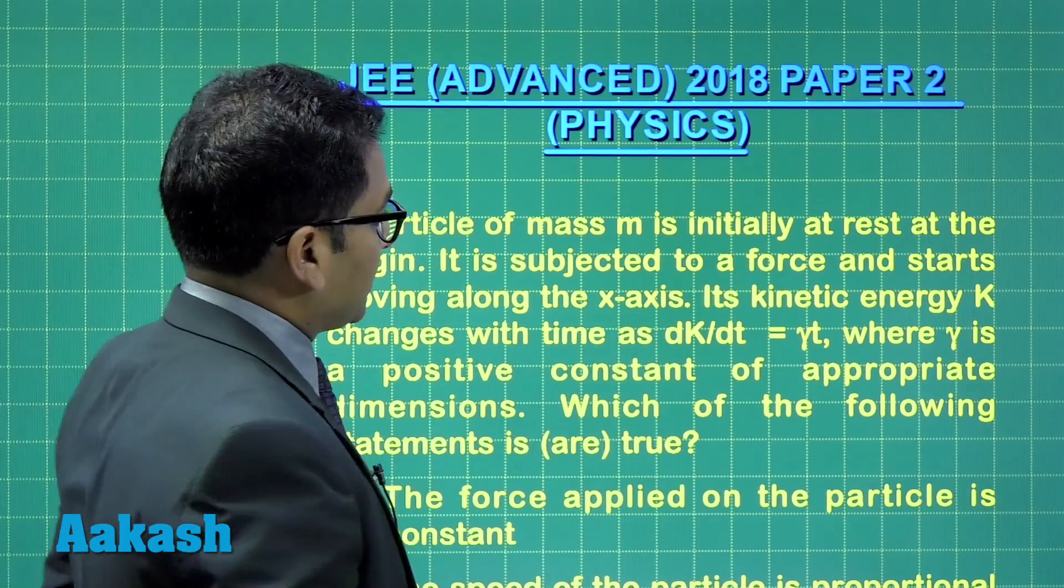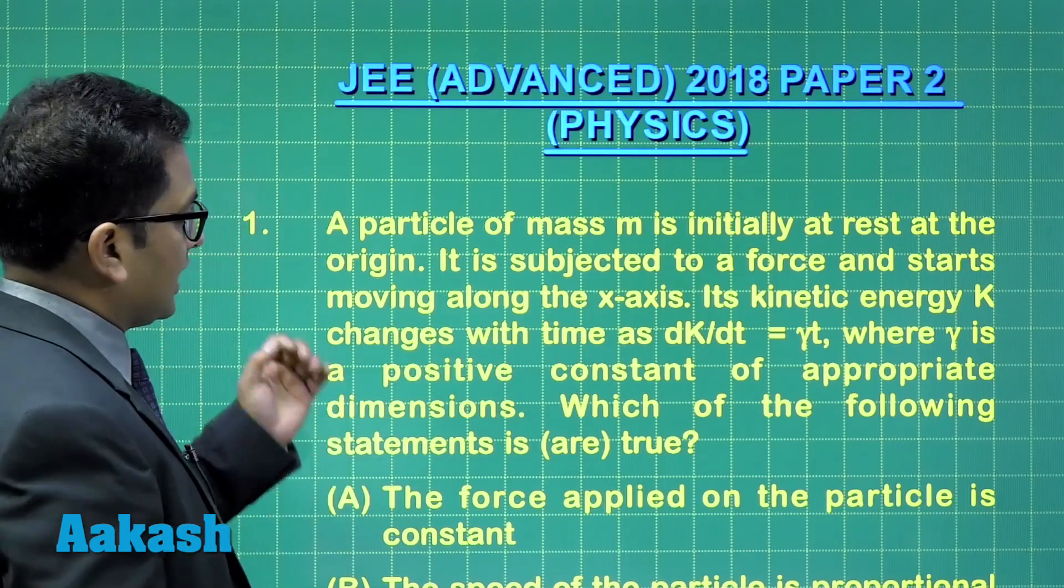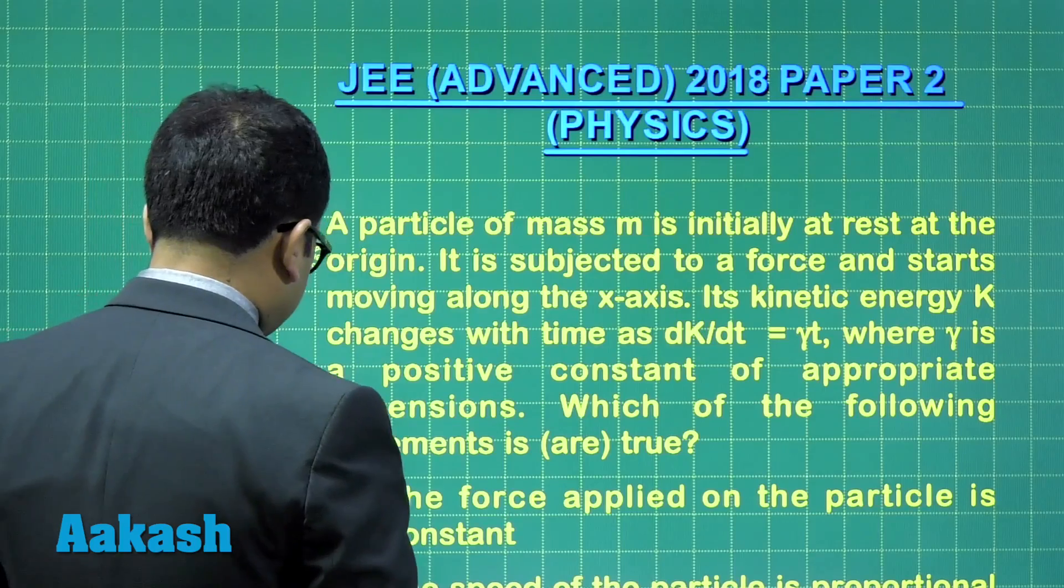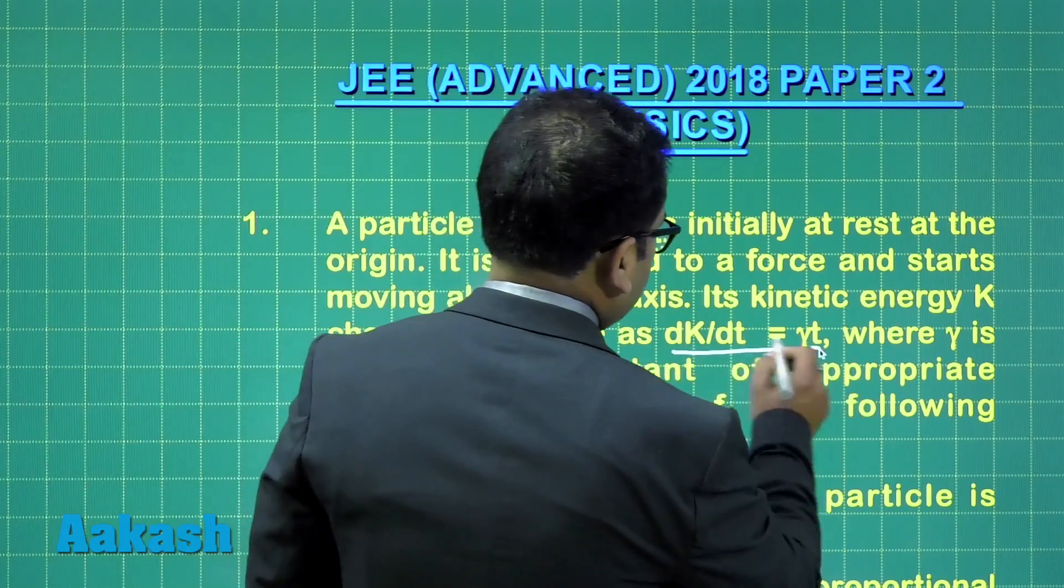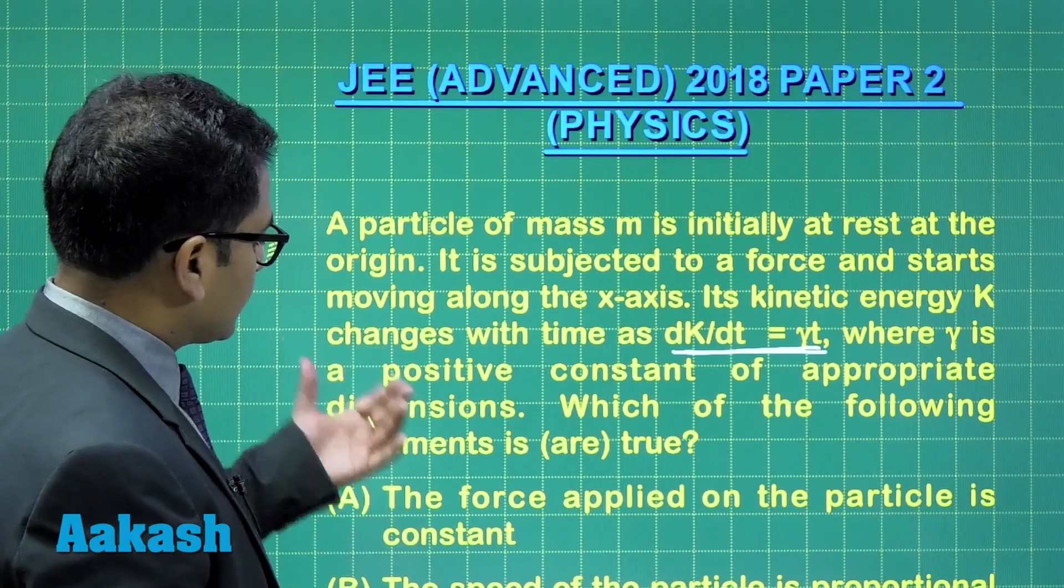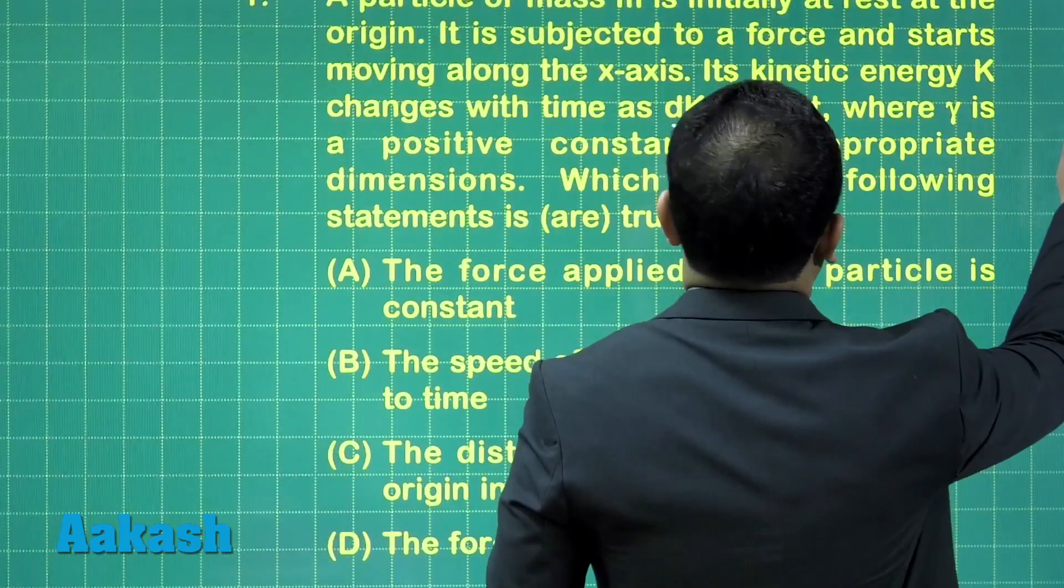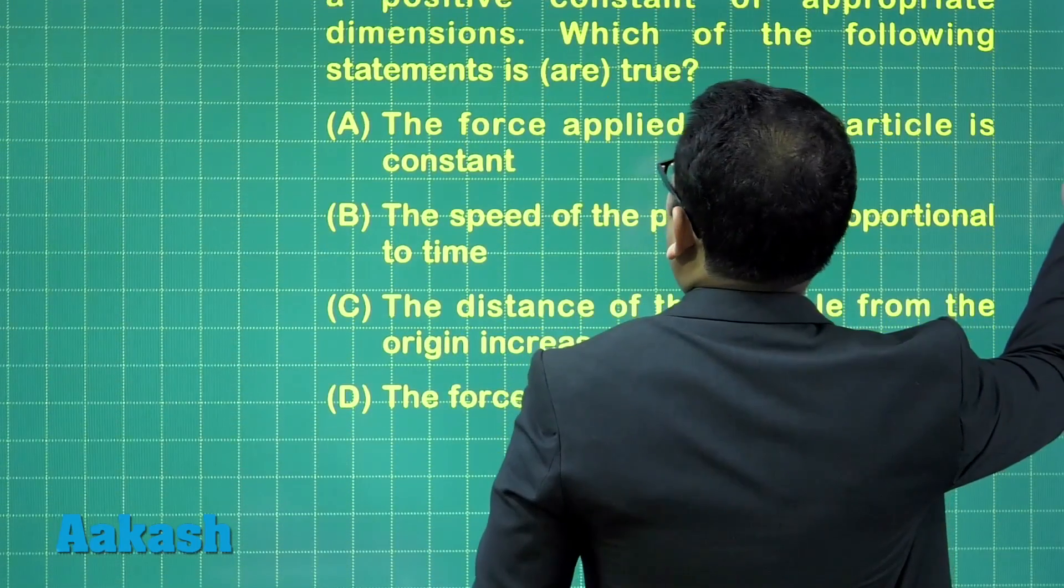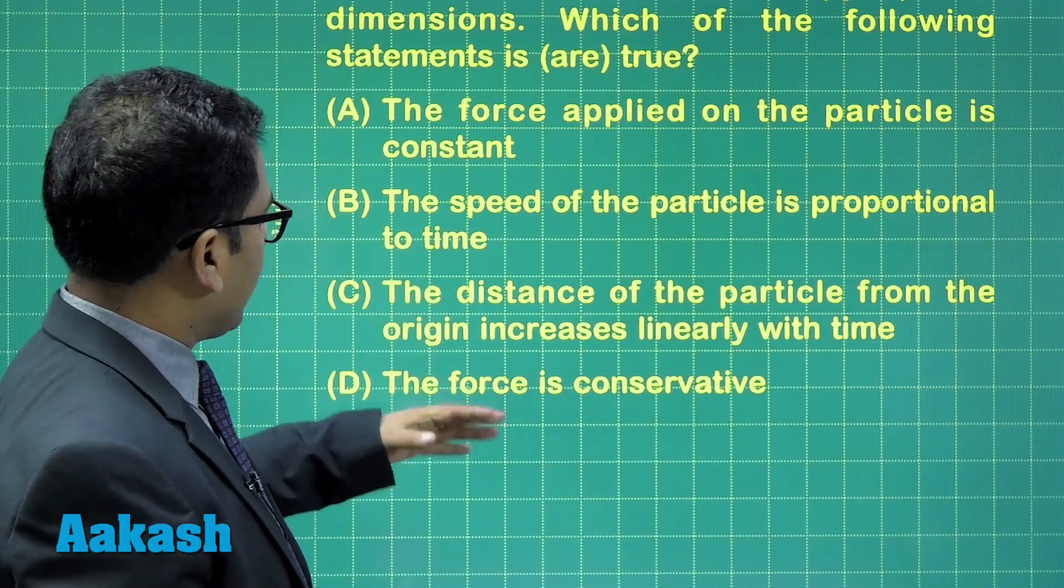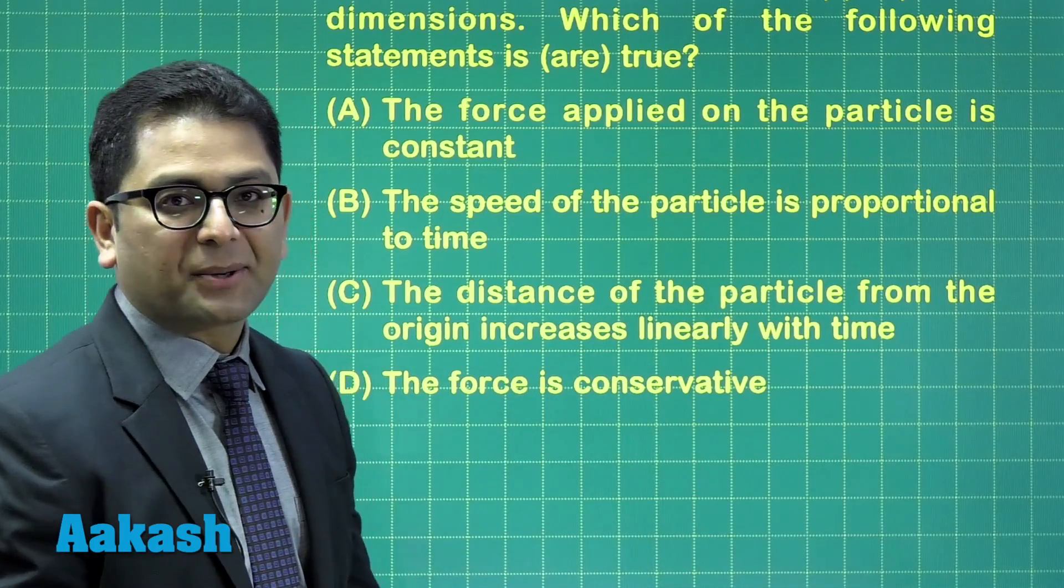A particle of mass M is initially at rest at the origin, is subjected to a force, and starts moving along x-axis. And you could see the kinetic energy is there, and the kinetic energy changes with time in this given manner. And we need to see the force applied on the particle is constant, speed, and all those things. Let's try to see the option. The option says, talk about the force, whether it's constant or variable, speed, and the distance, and the force will be conservative or non-conservativeness.